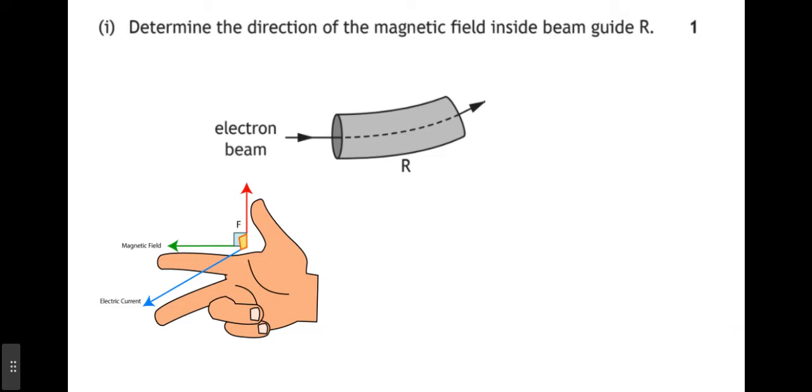So, the current, in this case, is going from left to right across the screen. So, I'm going to turn my hand around so that my second finger is pointing from left to right across the screen. So, basically, I'm trying to point away from my index fingers pointing away from the screen. My thumb is the force that the electron is experiencing, which is upwards. So, my thumb is pointing upwards. My second finger is pointing from left to right across the screen. So, my first finger, the field, is pointing out of the screen.